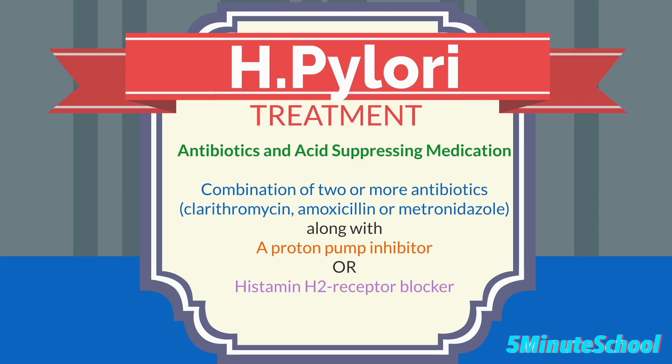H. pylori infection is typically treated with a combination of antibiotics and acid-suppressing medications. The aim is to eradicate the bacteria and allow the stomach lining to heal. Common antibiotic regimens may include a combination of two or more antibiotics such as clarithromycin, amoxicillin, or metronidazole, along with a proton pump inhibitor or histamine H2 receptor blocker. After completing the prescribed treatment regimen, follow-up tests may be done to confirm eradication.